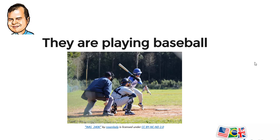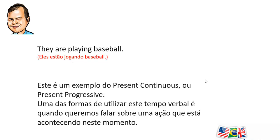Pay attention to this sentence here: 'They are playing baseball.' This is an example of the present continuous, or present progressive. One of the ways to use this verb tense is when we are talking about a situation that is happening right now. There are other uses, but this is the one we are focusing on in this class today.